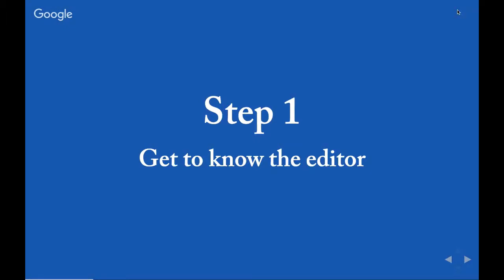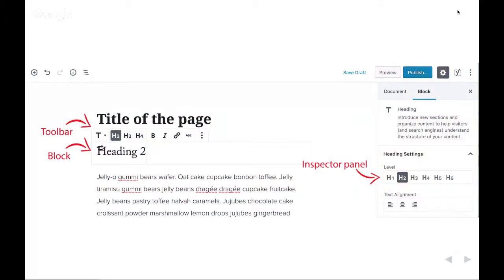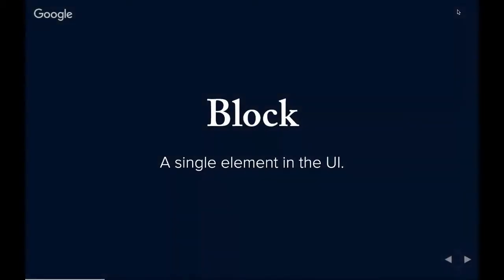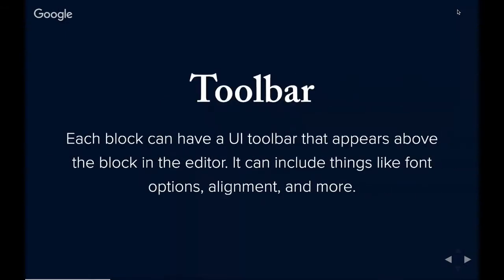So the first step in trying to figure out what we need was to really get to know the Gutenberg editor. Looking at a basic screenshot of what the content editor looks like, a block is just a single element in the user interface — that could be a paragraph, a header, an image, or a table. The toolbar sits above each block and can include things like font options, alignments, media options — any sort of UI functionality that applies to a specific block. For example, a paragraph block would have options to bold, italicize, underline, strikethrough.